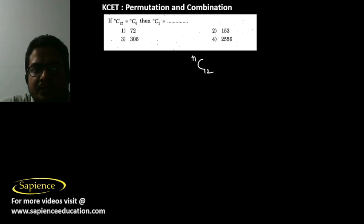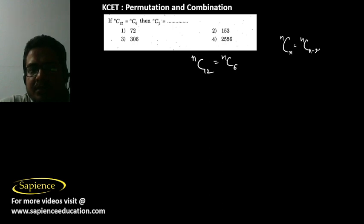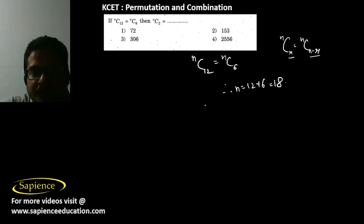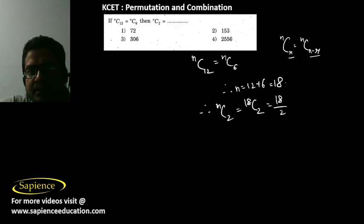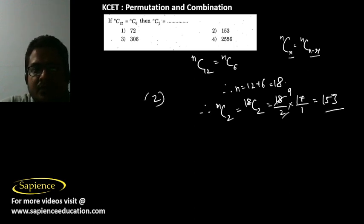Here it is told that nC12 = nC6; find nC2. We know that if nCr = nCs, then r + s = n. Therefore n = 12 + 6 = 18. So nC2 means 18C2 = (18 × 17) / (2 × 1) = 9 × 17 = 153. Option 2 is the correct answer.